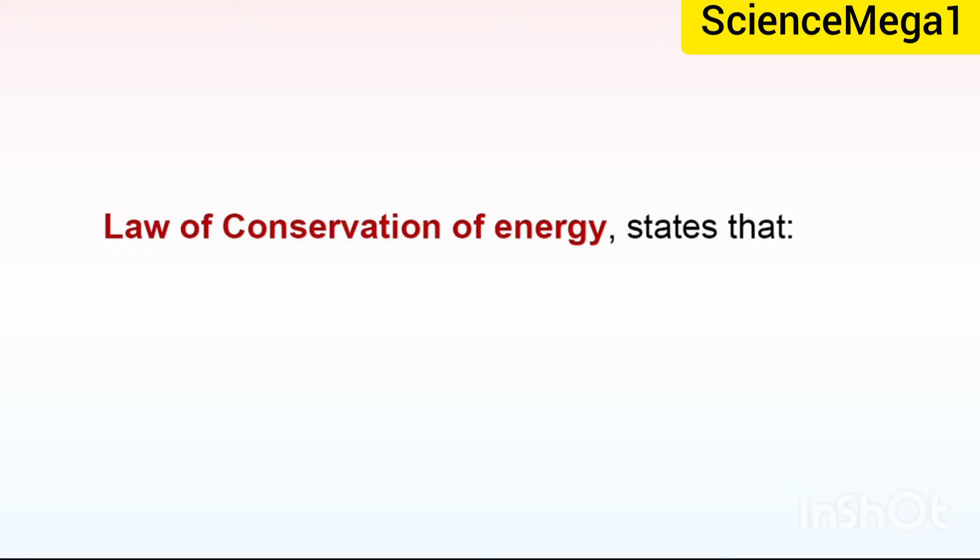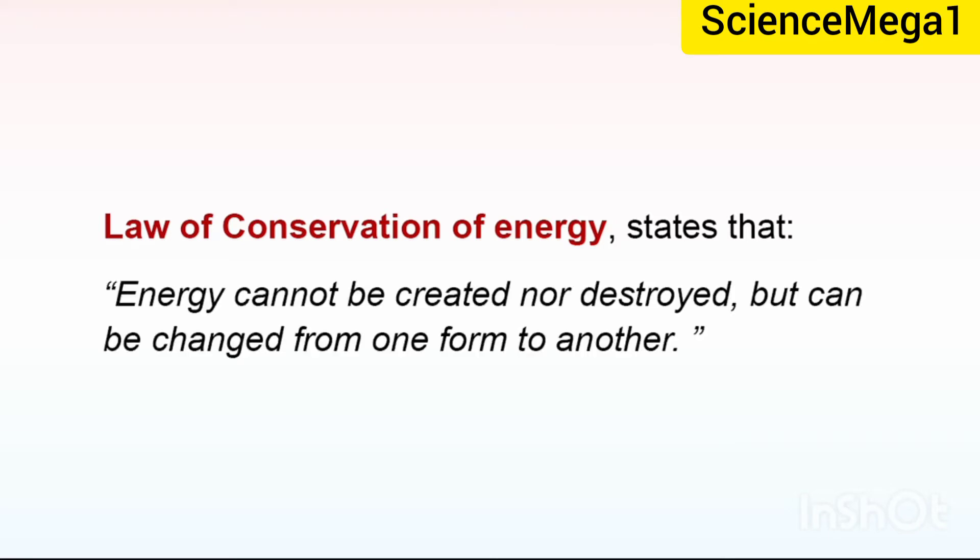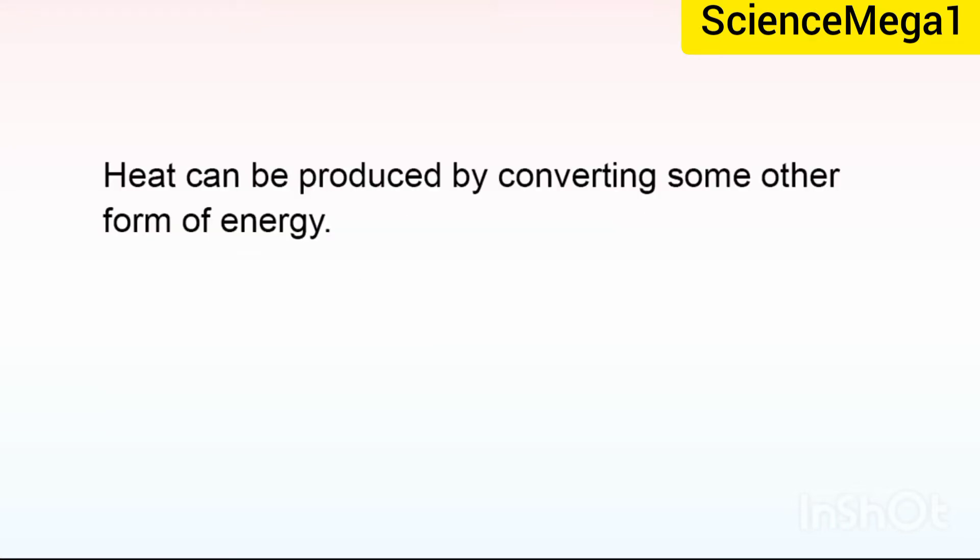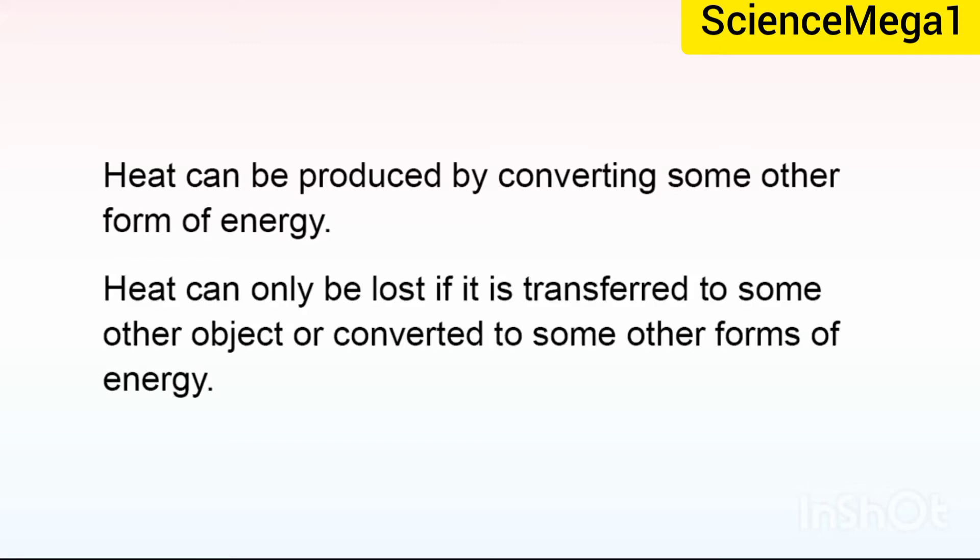The law of conservation of energy states that energy cannot be created nor destroyed, but can be changed from one form to another. Since heat is a form of energy, this law also applies to heat. Therefore, heat cannot be created nor destroyed. Heat can be produced by converting some other form of energy. Heat can only be lost if it is transferred to some other object or converted to some other forms of energy.